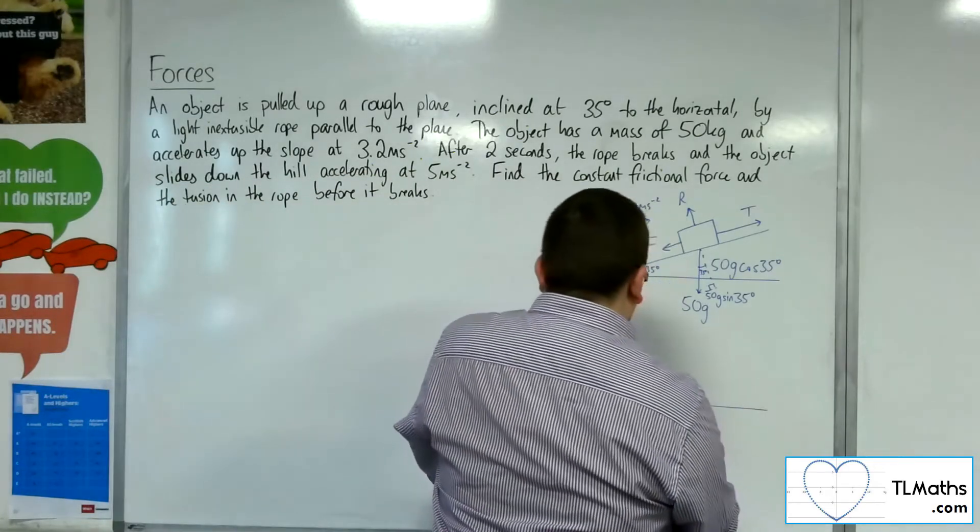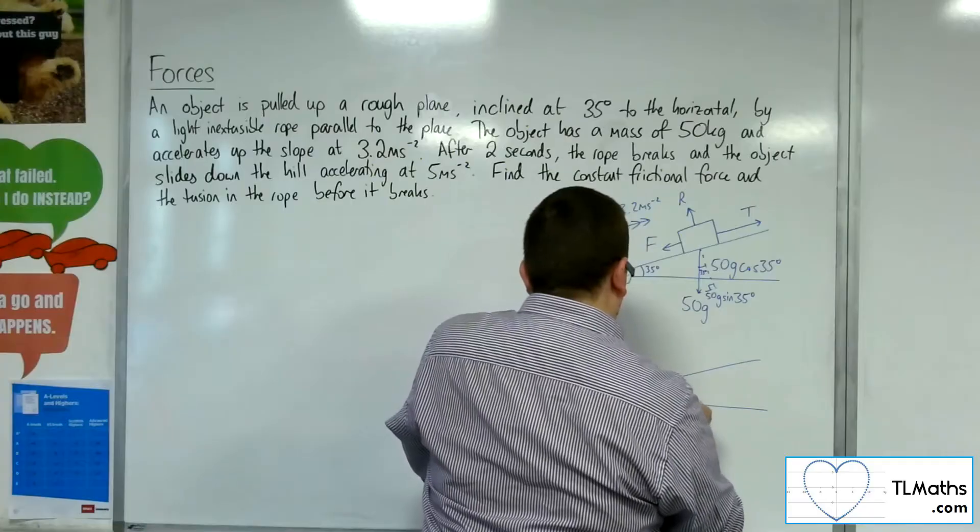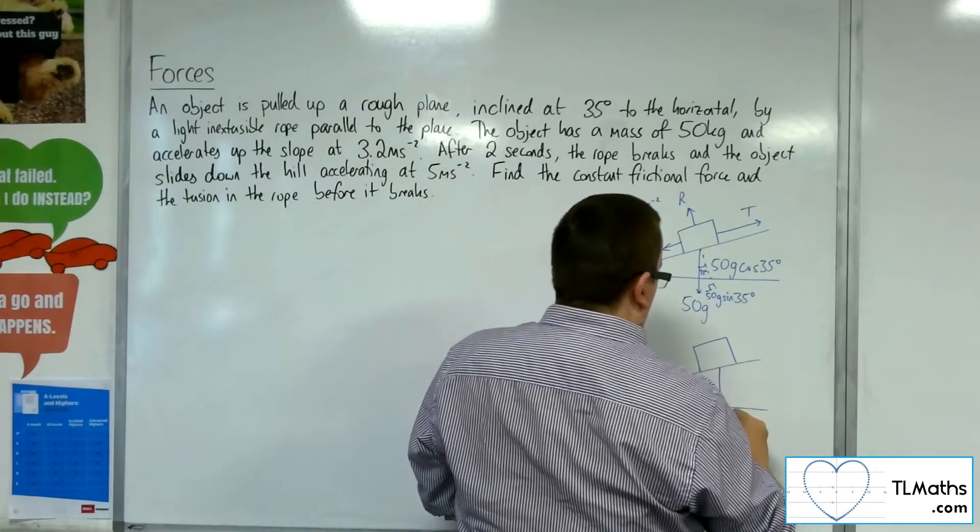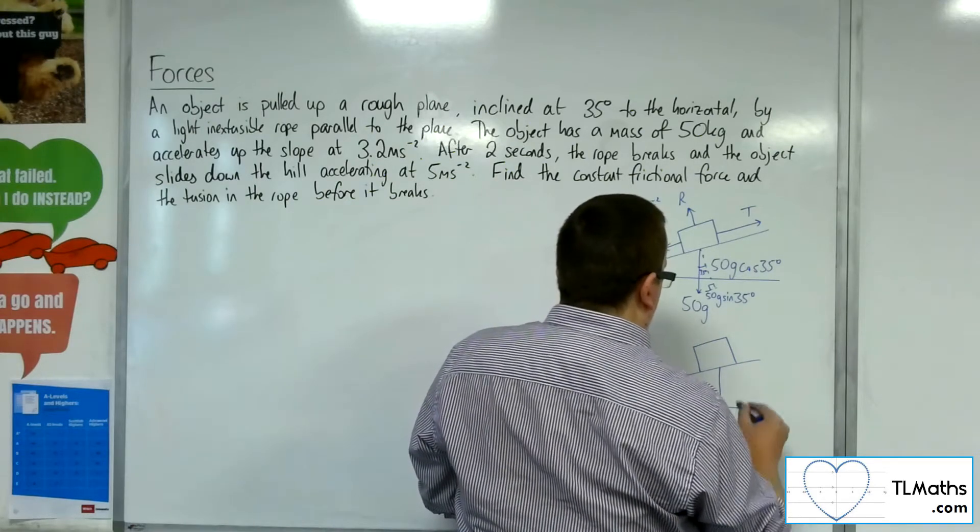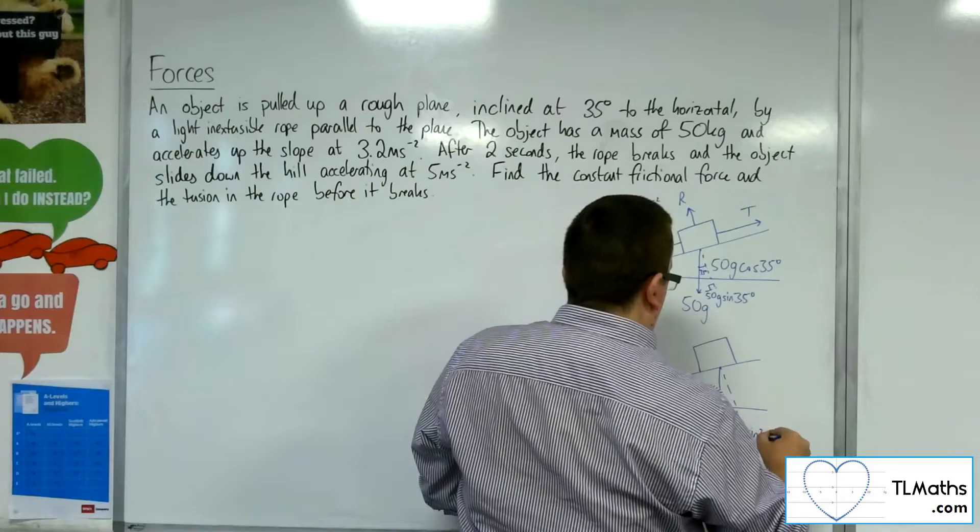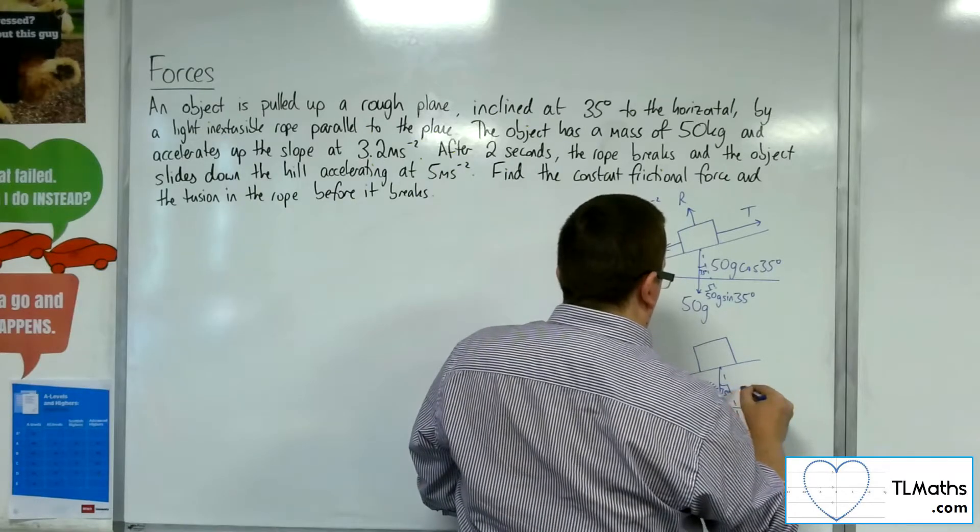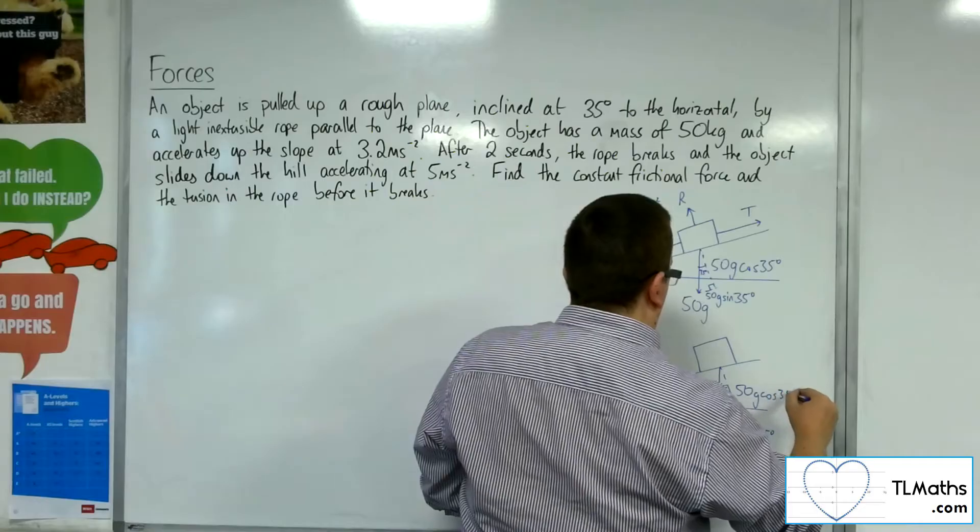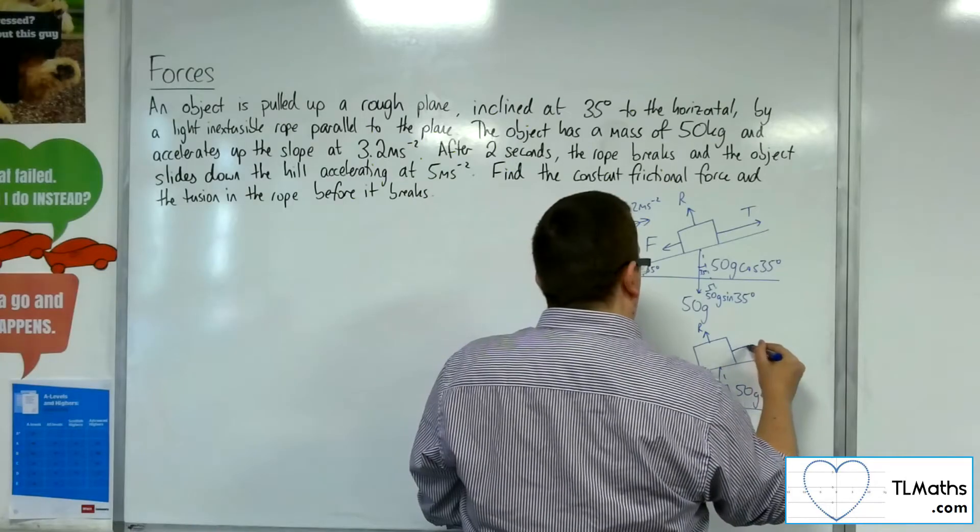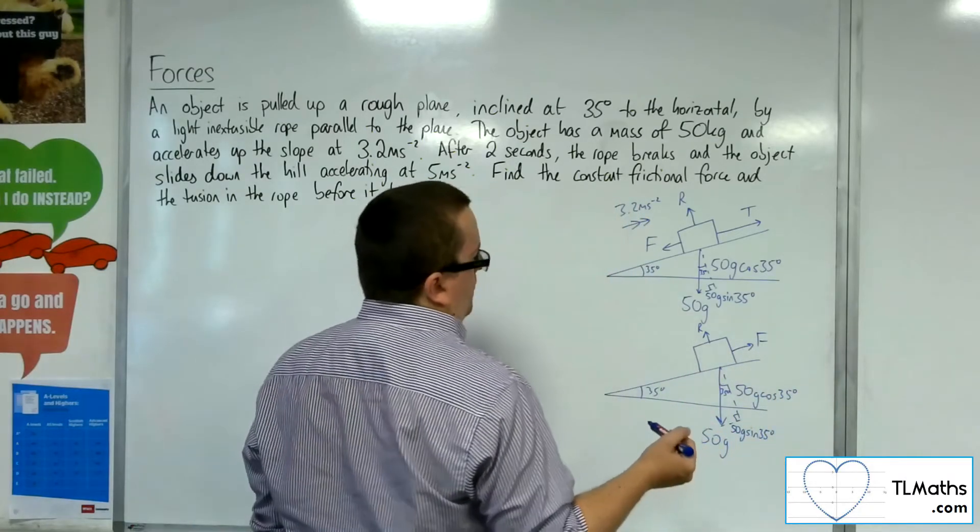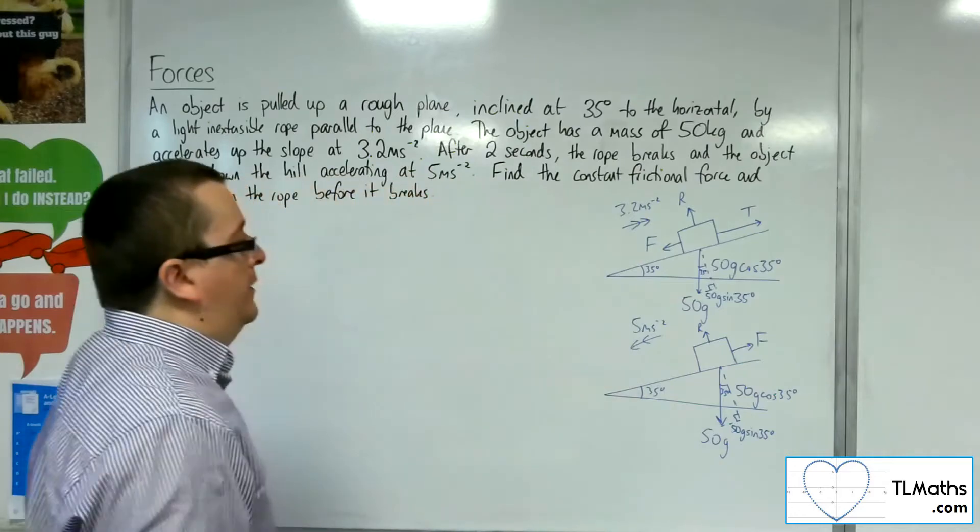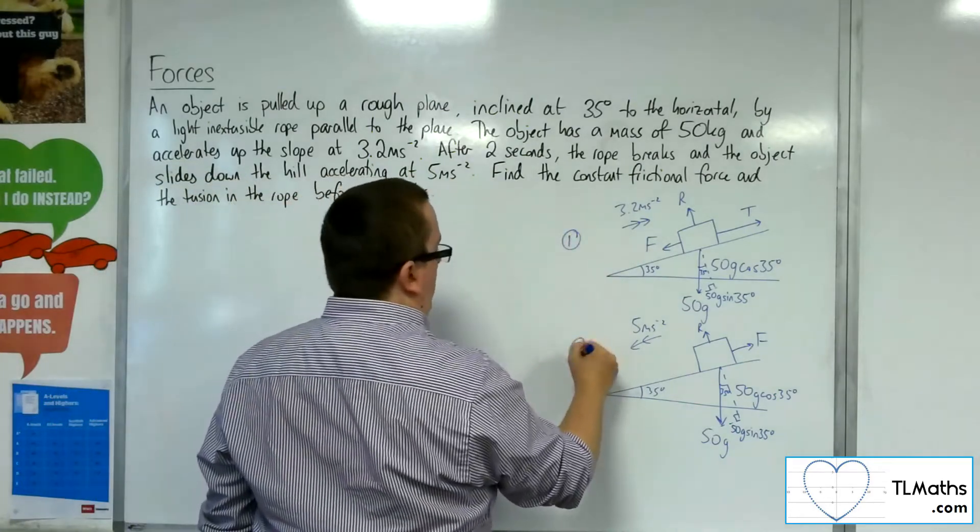The second stage, we've got the block on the slope but the rope has broken. We've still got the weight working downwards, so 50g, which gives us 50g sin 35 and 50g cos 35. I've still got that normal reaction force, but the friction is now working against the direction of motion and we're accelerating down at 5 metres per second per second. So here's stage 1, here's stage 2. This is the situation that I have.